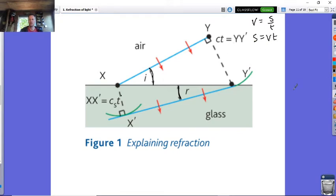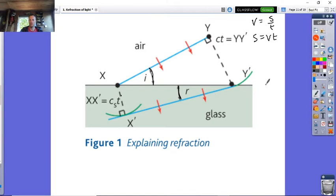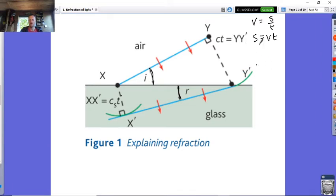This distance I was looking at is from Y to Y'. Therefore, your distance going through here, Y to Y', will equal ct because c is going to be the speed of the wave in air, which will be more or less the same speed as through a vacuum, and that's why we're using the symbol c.